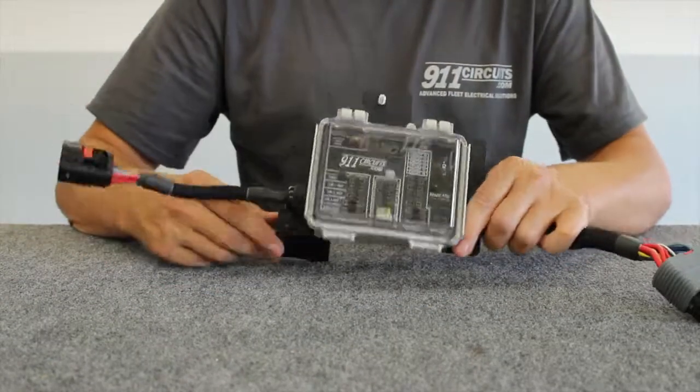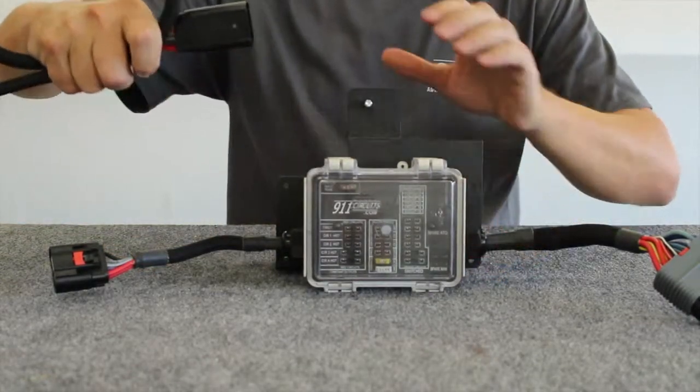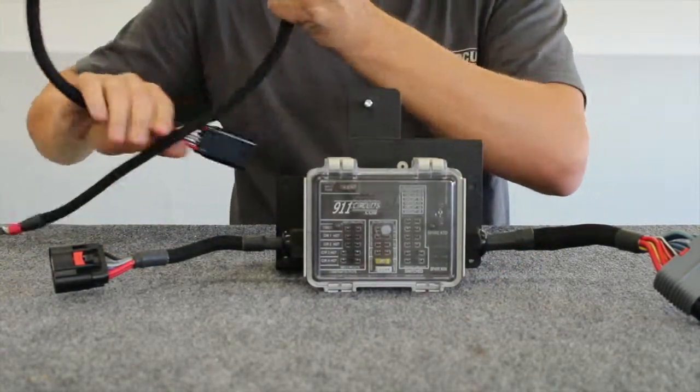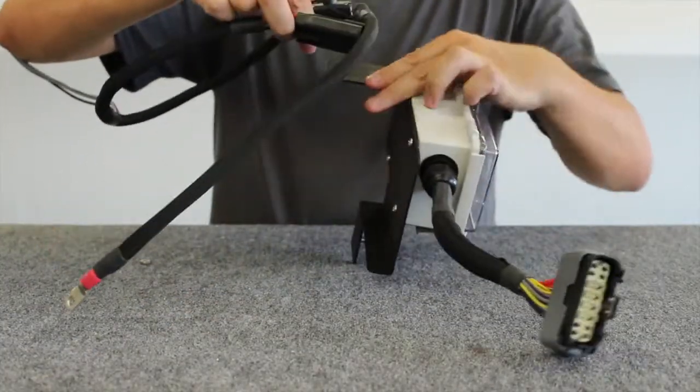So we're mounted to the mounting bracket for the Chevy Tahoe, and we're going to take our power wires, which come with it. And we're going to mount our circuit breaker to the unit as well. So let's mount our circuit breaker to the unit.